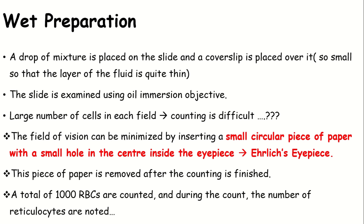The counting will be difficult, so we use a special type of eyepiece - Ehrlich's eyepiece. The field of view is used and we insert the RBCs within this field to count more easily. This is Ehrlich's eyepiece, and the paper contains 10 divisions to count the RBCs.